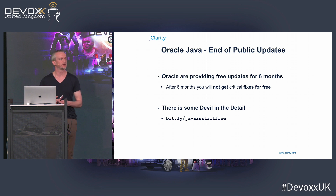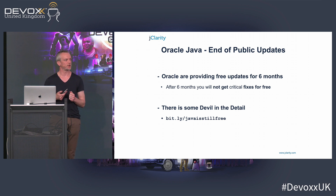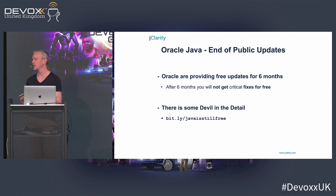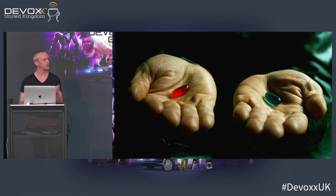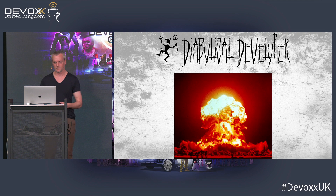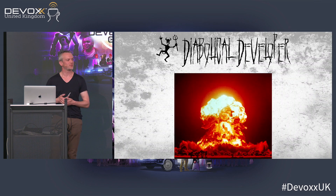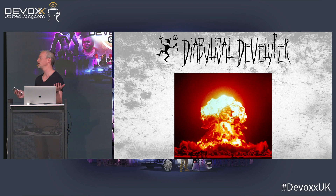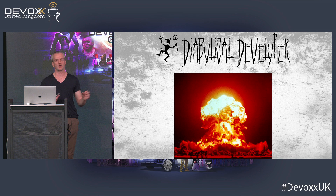So, what are your options? All of a sudden you go to Oracle.com to download Java and you're being told you need to enter a license agreement or a subscription agreement. So you have three choices. Choice number one: don't update. Stay on the version that you have. Don't get security updates. Don't get stability updates. Just carry on using your Java in production.